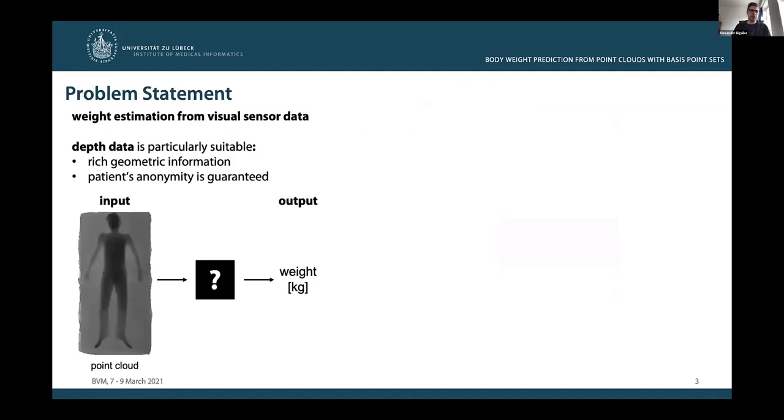This can be achieved by deriving weight estimates from visual sensor data. We believe that depth sensors are particularly suitable for the task at hand for two reasons. Firstly, depth data and corresponding point clouds carry rich geometric information, which is essential for weight estimation. Secondly, depth data guarantees the patient's anonymity, which is very important for practical usage in the hospital.